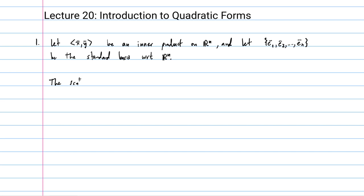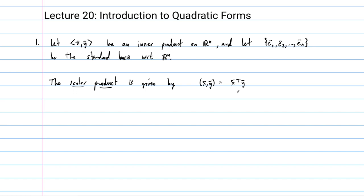The fundamental example of an inner product was the dot product from calculus, which we call the scalar product in this class. The scalar product with respect to this standard basis is given by X transpose times Y, and it turns out that this is symmetric and obeys all the rules of an inner product.